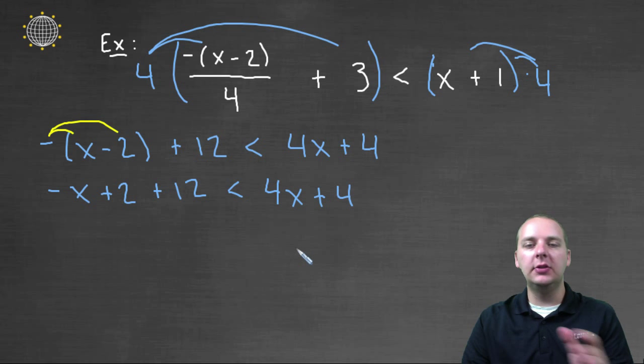And then we'll move the x's to one side, and move the constants to the other. It doesn't really matter which side we move everything to. I think what I would probably do would be to add x to both sides. Which will get rid of this minus x plus x, and twelve and two make fourteen.